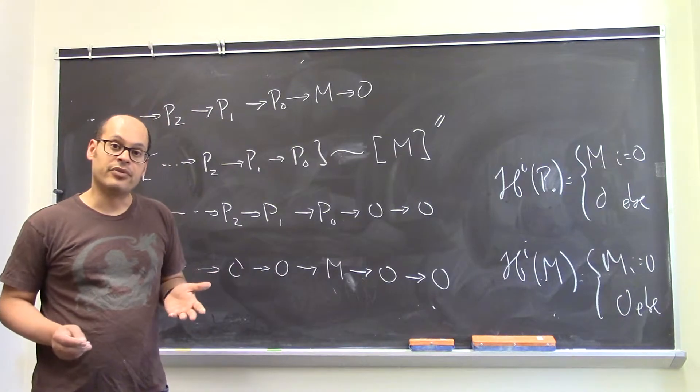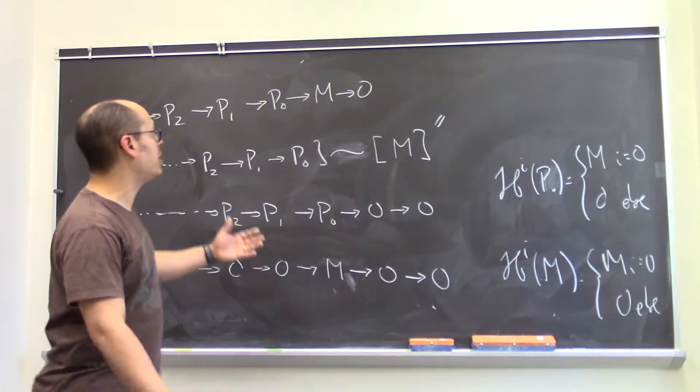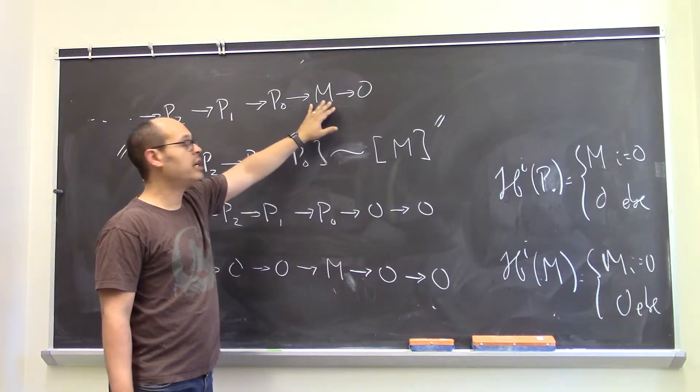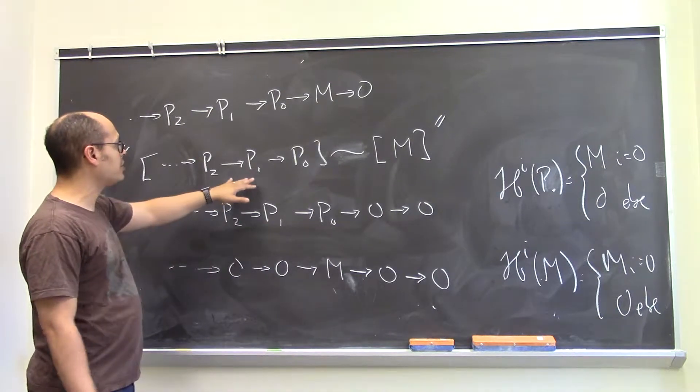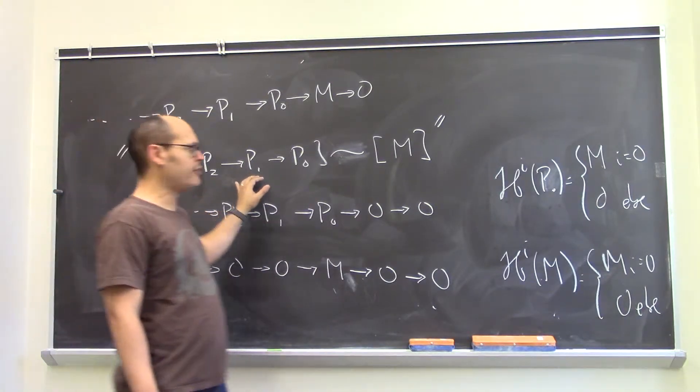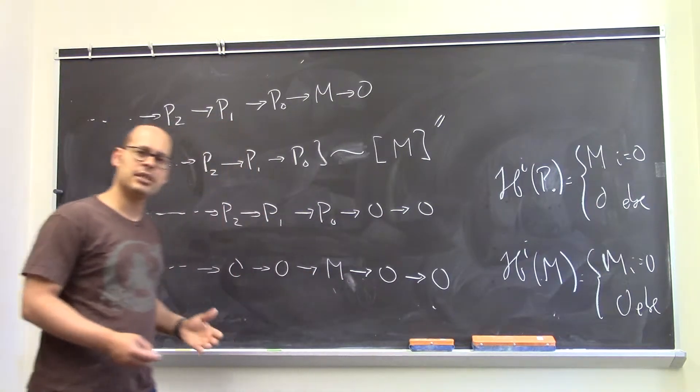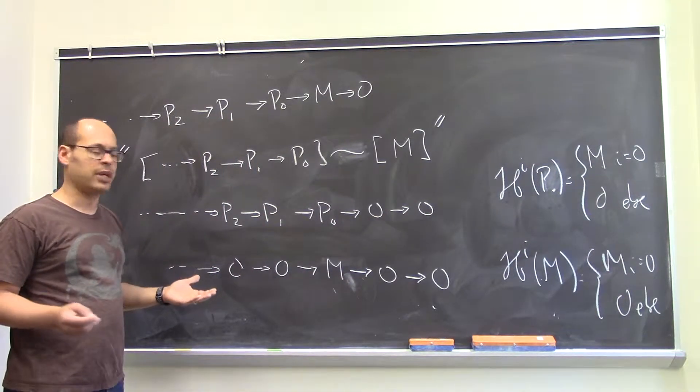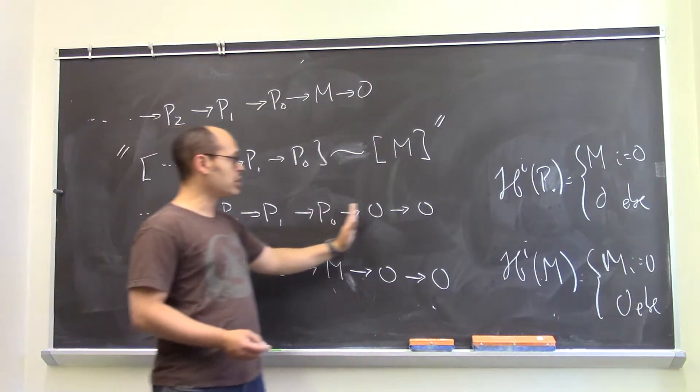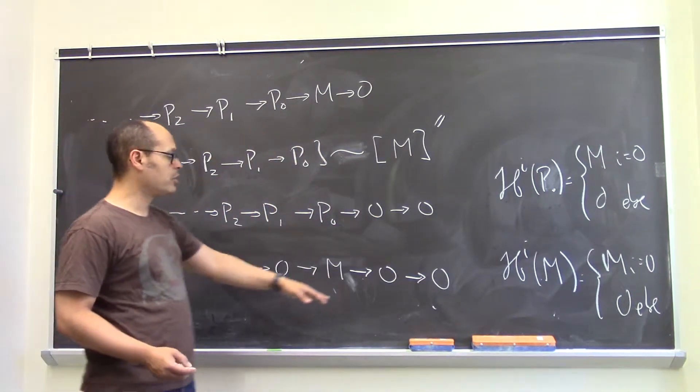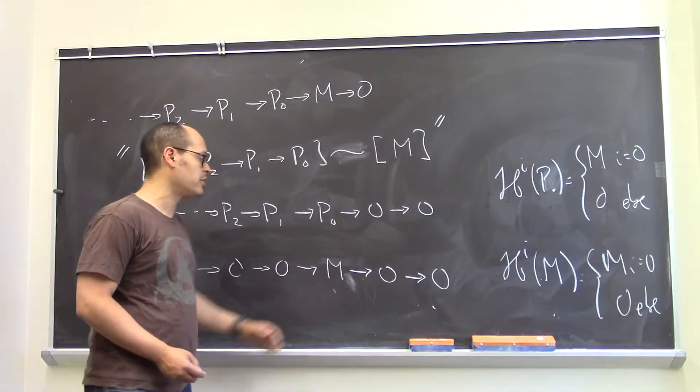A nice illustrative example of quasi-isomorphisms is given by resolutions. So suppose you have, for example, some R module for some ring R and a projective resolution. We would like to say that the resolution is in some sense isomorphic, or in fact quasi-isomorphic, to the module itself. To make sense of this, we need to interpret both as complexes. Of course, the projective resolution is itself a complex, which you can then continue by zeros on the right. The module we want to interpret as a complex sitting in degree zero, concentrated in degree zero.